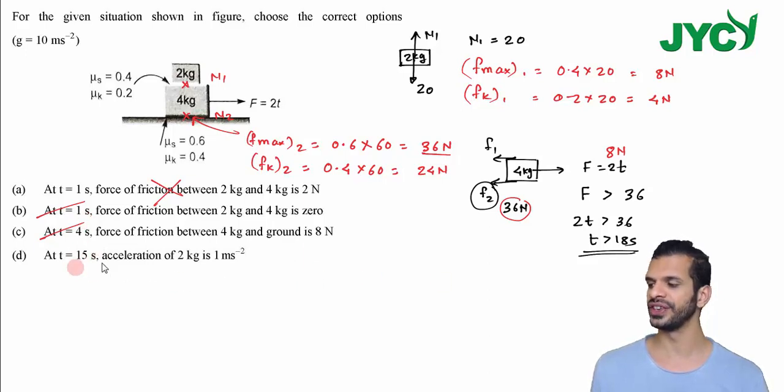Now here at time equal to 15 seconds, the force will be 30 Newton which is again less than 36 Newton, so in this case the body won't move. So the acceleration of 4 kg is 0, so the acceleration of 2 kg is also 0. So here this option is also wrong. So here the correct options are B and C.